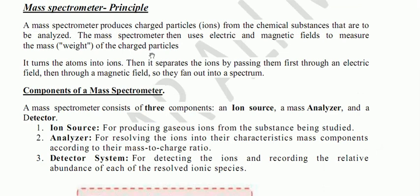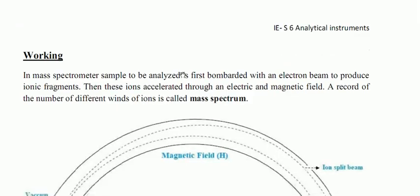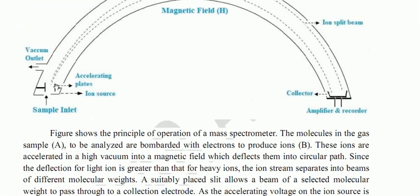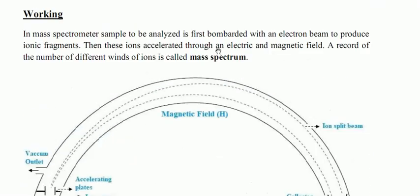These ions are then accelerated by passing them through an electric field and then through a magnetic field. The sample is first ionized and then accelerated through an electric field and a magnetic field.